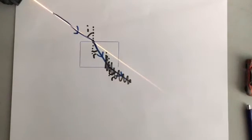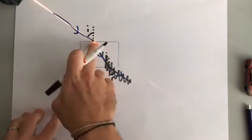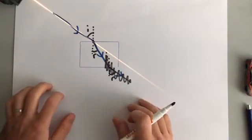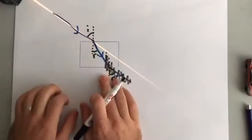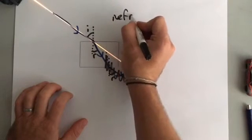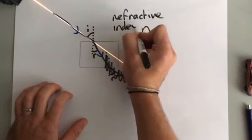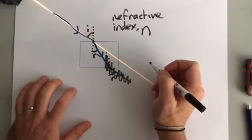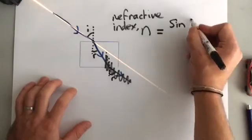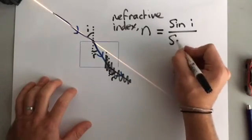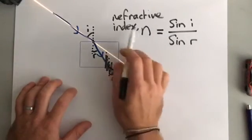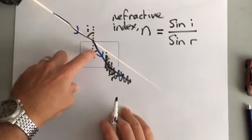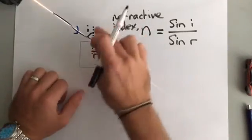There is an equation we can use to determine how much the light is going to be refracted. The amount depends on what type of material we are using, and each pair of materials has something called a refractive index. We use the letter N. The refractive index is the sine of the angle of incidence divided by the sine of the angle of refraction. You can't have a refractive index for just one material — you can only have a refractive index for a pair of materials. In this case, if we measure I and R, we can calculate the refractive index of air to glass.